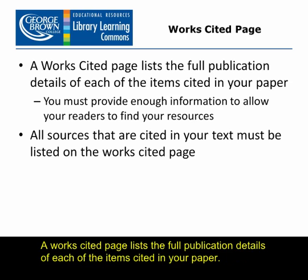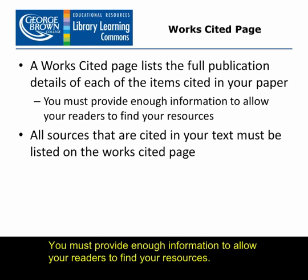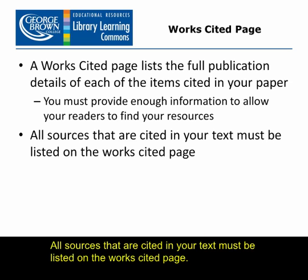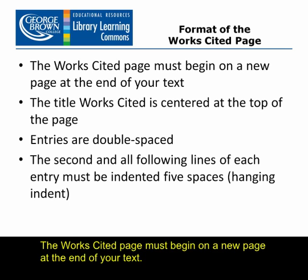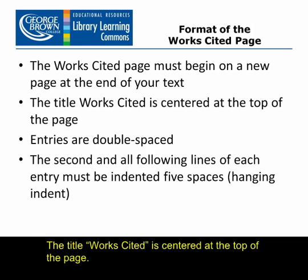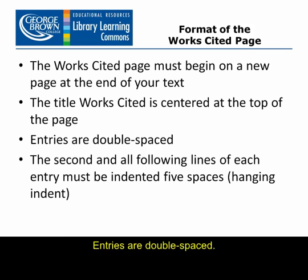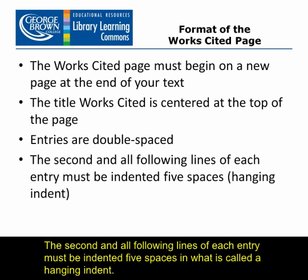A works cited page lists the full publication details of each of the items cited in your paper. You must provide enough information to allow your readers to find your resources. All sources cited in your text must be listed on the works cited page. The works cited page must begin on a new page at the end of your text. The title "Works Cited" is centered at the top of the page. Entries are double-spaced, and the second and all following lines of each entry must be indented five spaces in what is called a hanging indent.